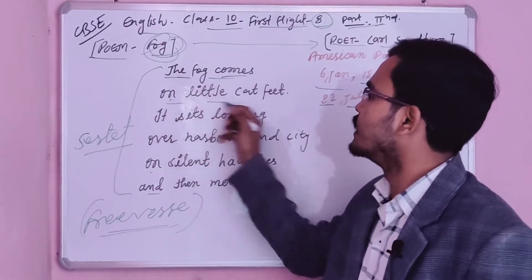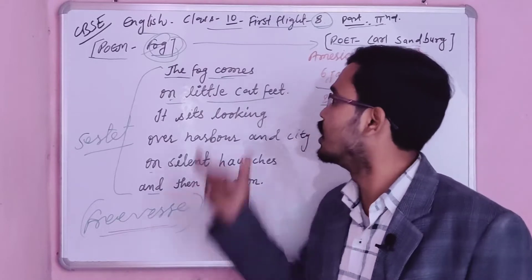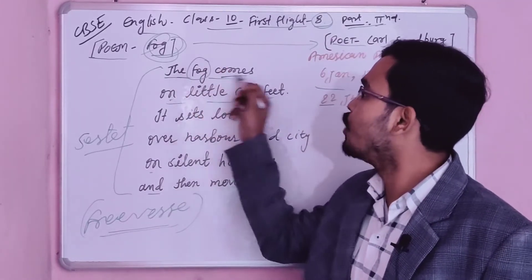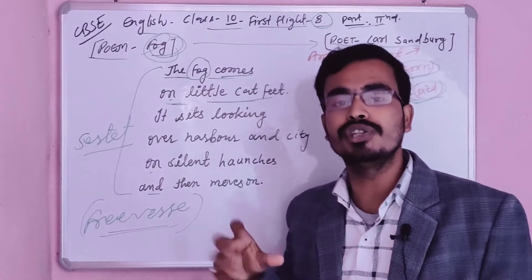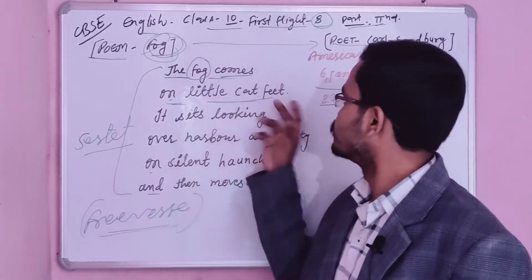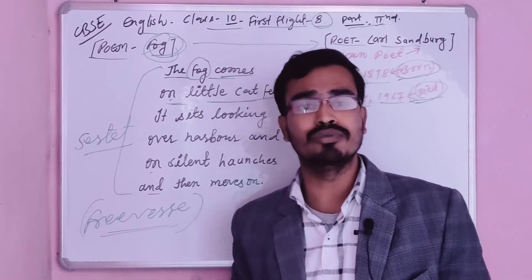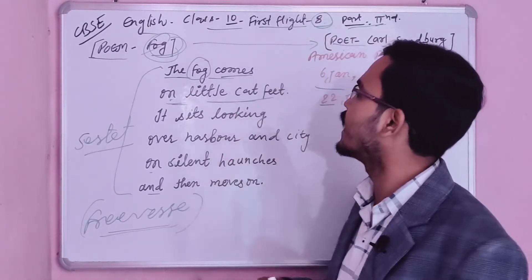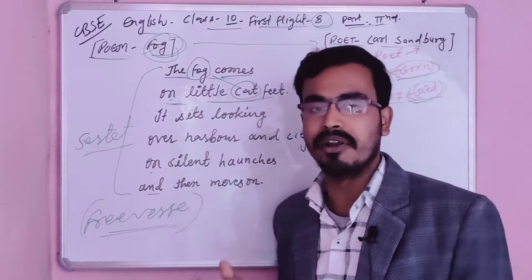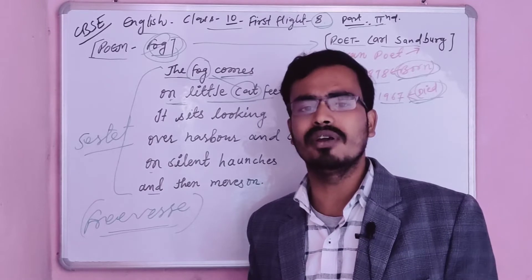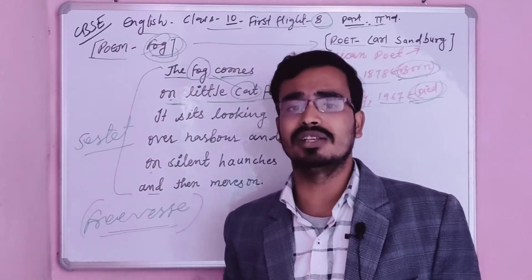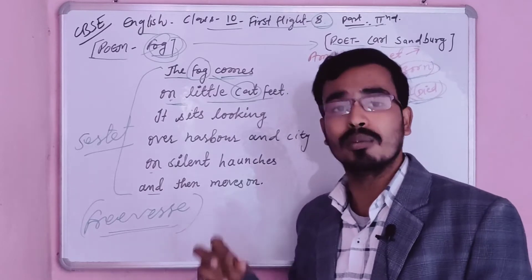The fog comes on little cat feet. If you talk about the noun, this is a simile. The fog comes on little cat feet, silent like a cat. In the same way, the fog and cat are compared. The fog comes on little cat feet. It came everywhere on little cat feet silently. The fog means no sound, the fog comes on little cat feet.